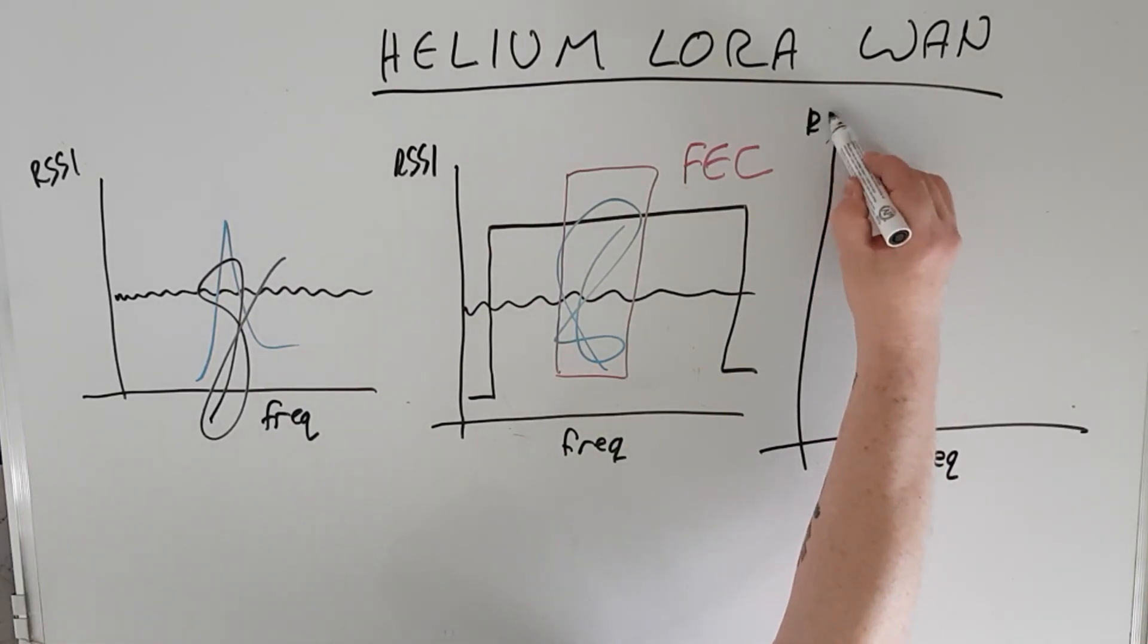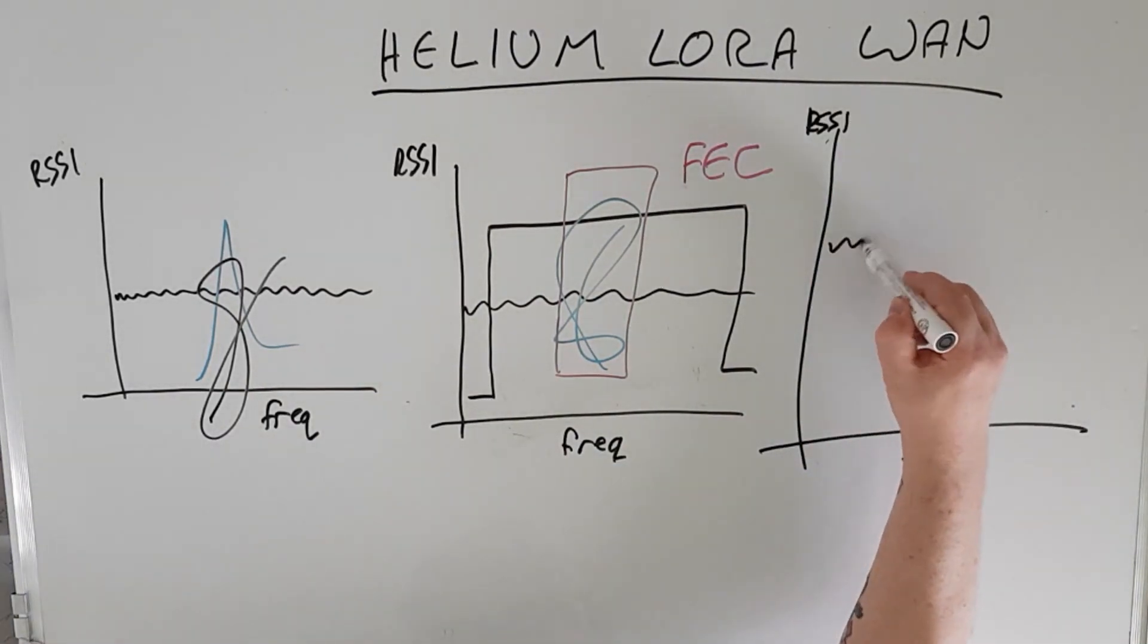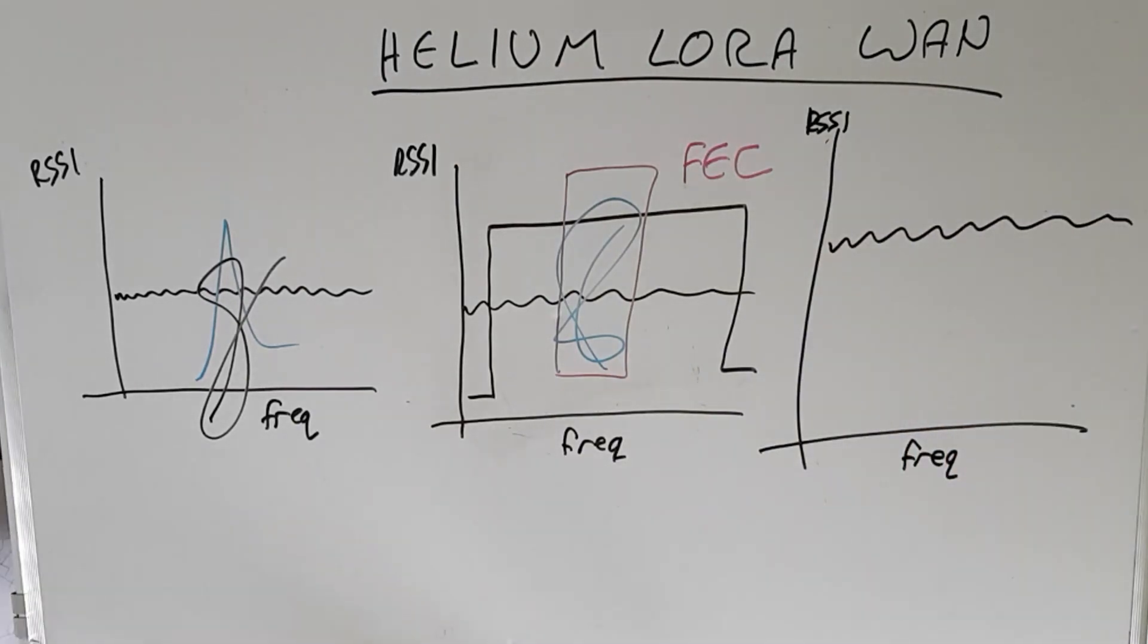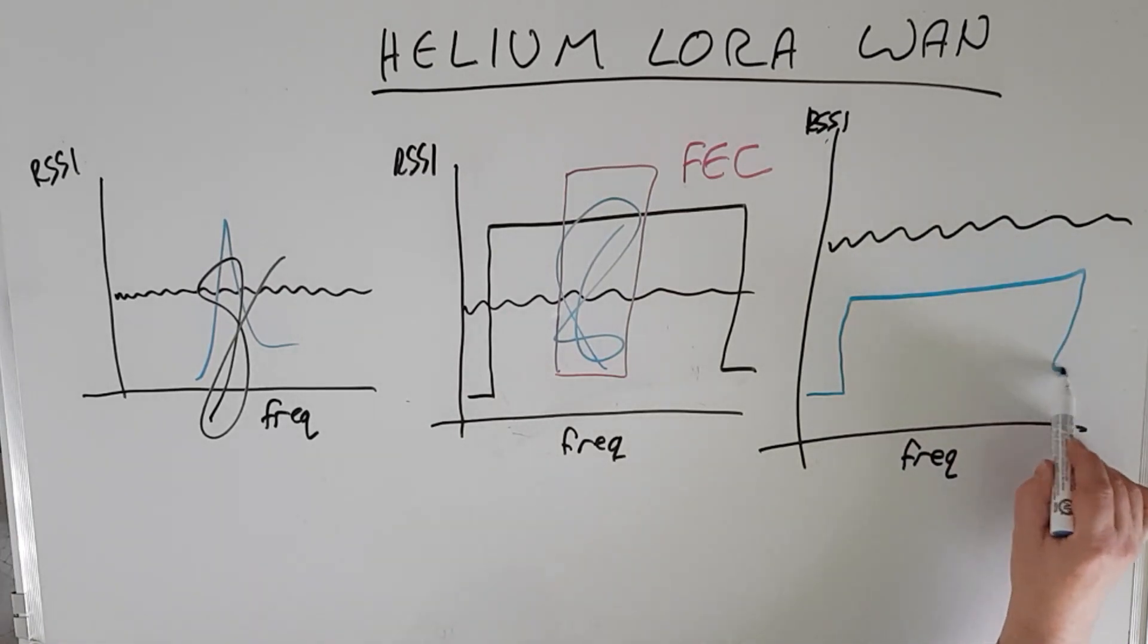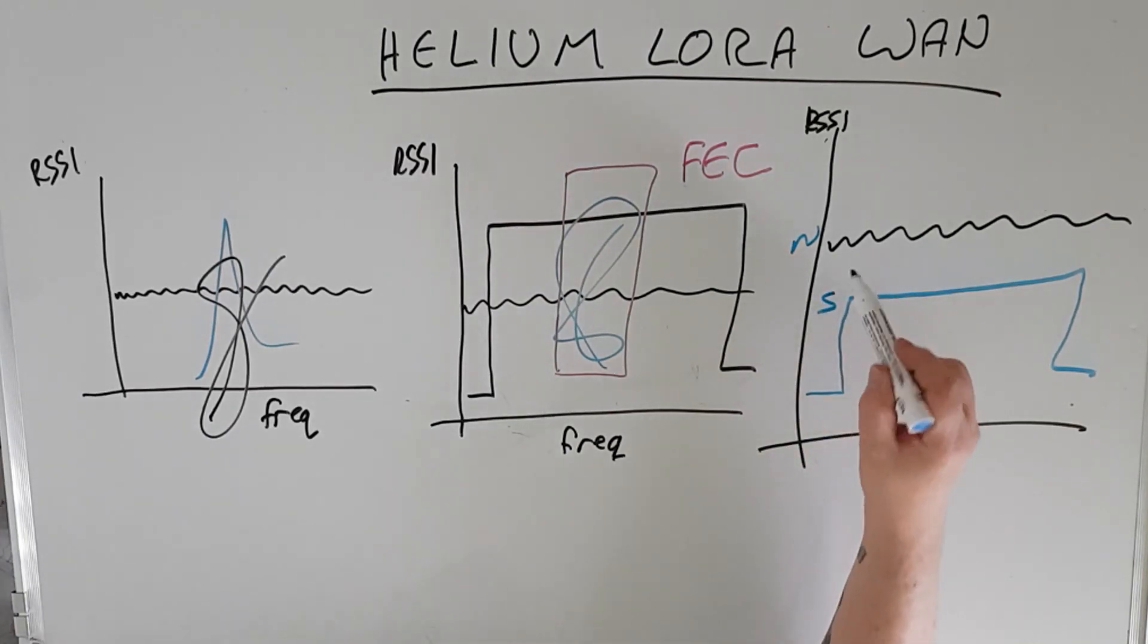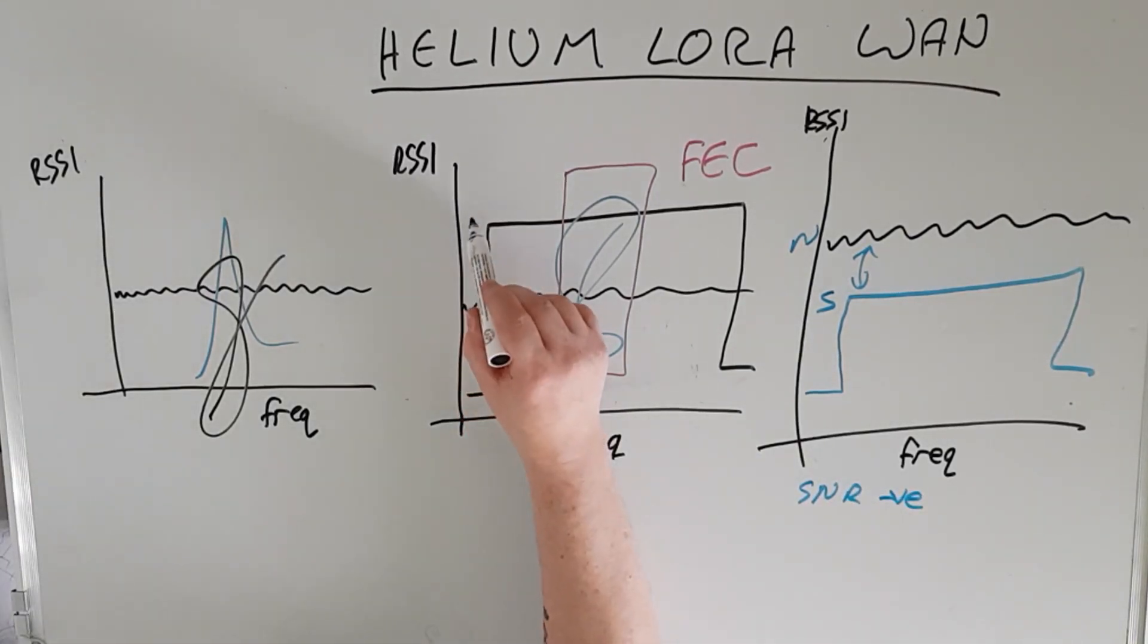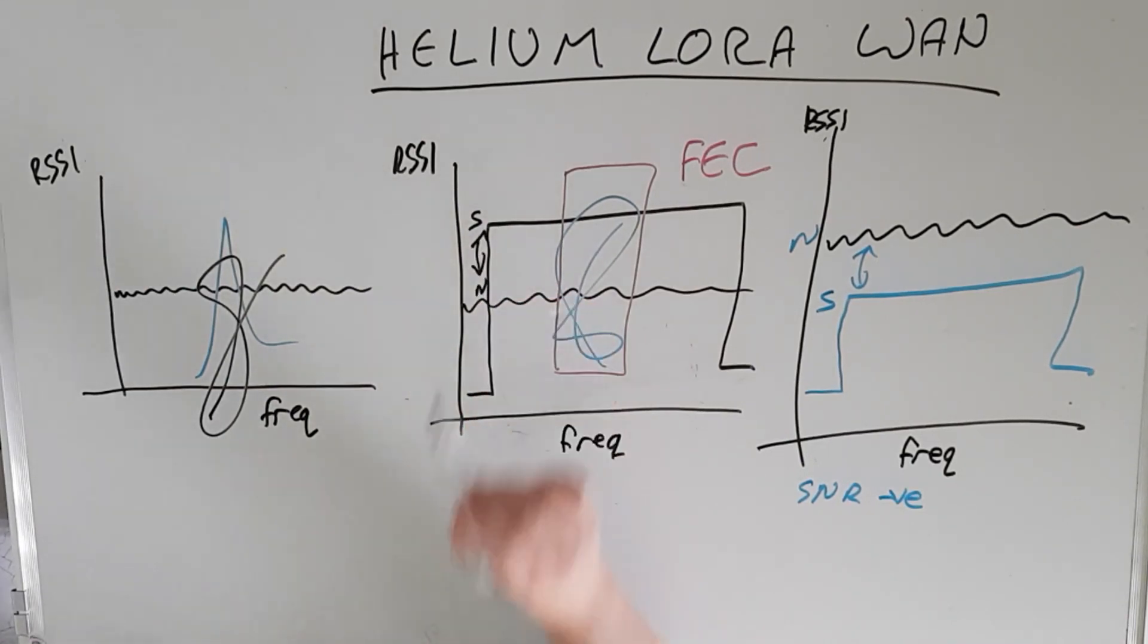If we zoom in on that chart a bit, still with RSSI versus frequency, we would have the noise kind of higher up here and we can get away with a signal much lower. So if we look at the signal to noise, we have the noise here and the signal here, we can see the signal is much lower than the noise, hence a negative signal to noise ratio. You can see here from the previous chart had signal there and noise there, hence a positive signal to noise ratio.